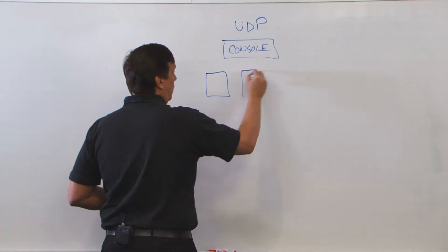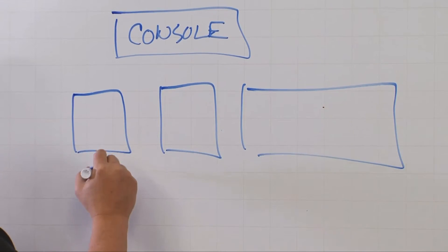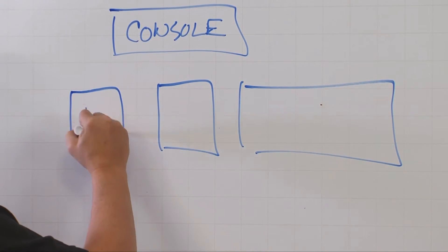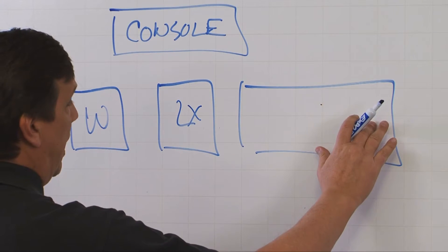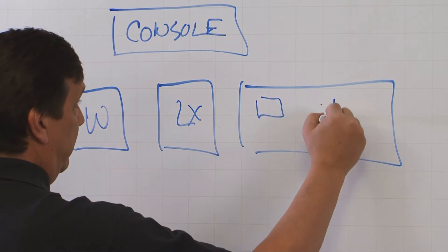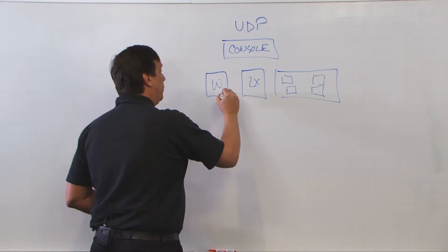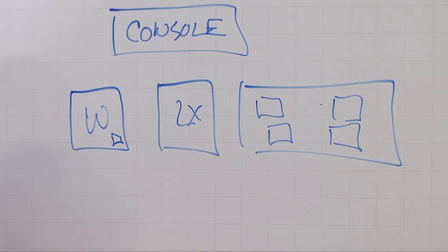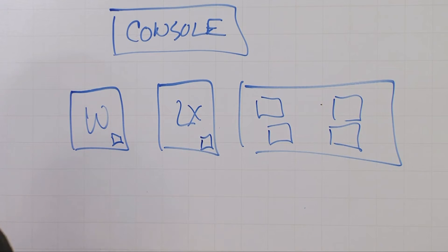From there, we then have agents which are installed. We can go to Windows or Linux, and you'll notice that this here is a hypervisor where we'll have multiple guests that are also installed. Agents are installed on physical machines, but we do agentless backups for virtual machines.